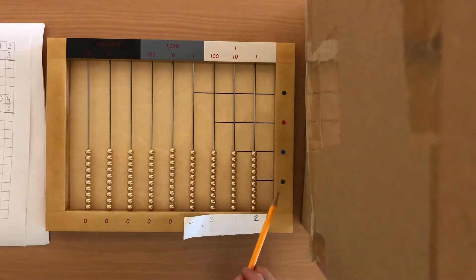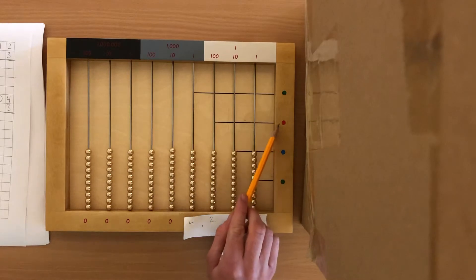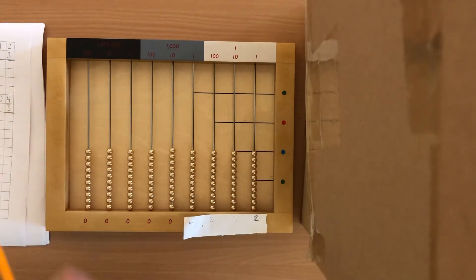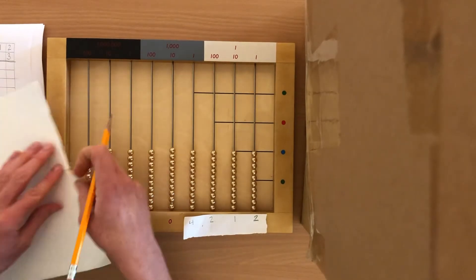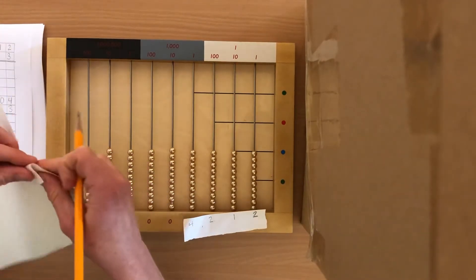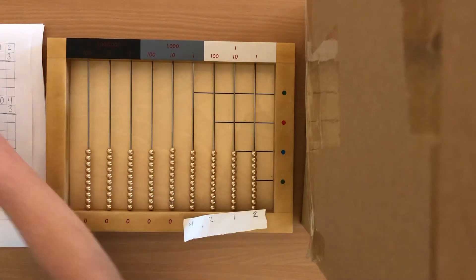And we're timesing it by a unit. So you see over here, you have thousands, hundreds, tens, and units. So it's times 3. So we're gonna do a little 3 on the paper. And again, we're tearing it, putting it here.